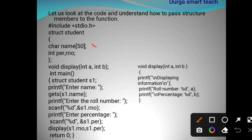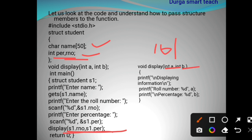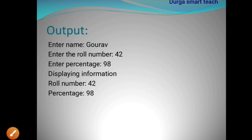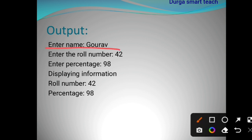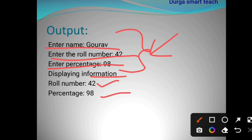We had three structure variables — name, roll number, and percentage — but here we are passing only two: s1.rnumber and s1.percentage. The output shows: enter the name — Gaurav; roll number — 42; percentage — 98. The program displays 42 and 98. Structure is used to store the student information and we pass selected structure members to the display function.